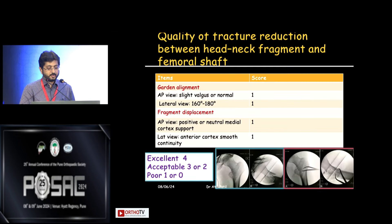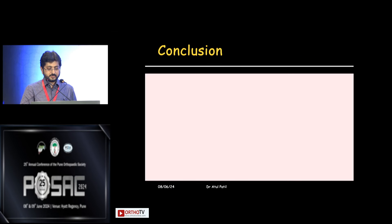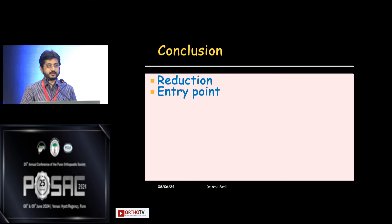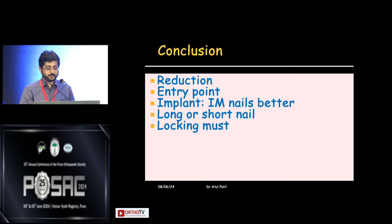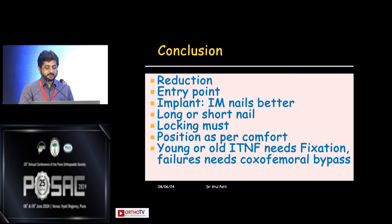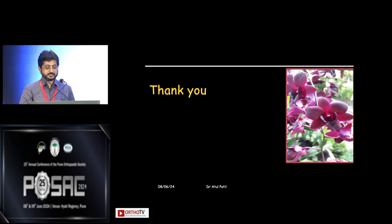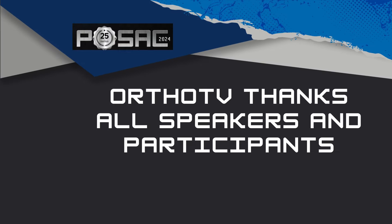In conclusion: reduction is important; entry point must be medial to the tip of the greater trochanter; intramedullary nails are better — I use long nails, and locking is a must; position according to your comfort. Young or old, IT and subtrochanteric fractures need fixation, and failures need femoral bypass.